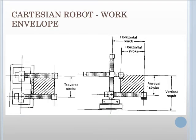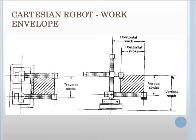For the Cartesian robot work envelope, there is a transfer stroke from one end to the other. In the top view, you can see the horizontal reach, and in the side view, you see the vertical stroke. The hatching line represents the operation area. There is a horizontal stroke and a vertical stroke defining the full working envelope of the Cartesian robot.